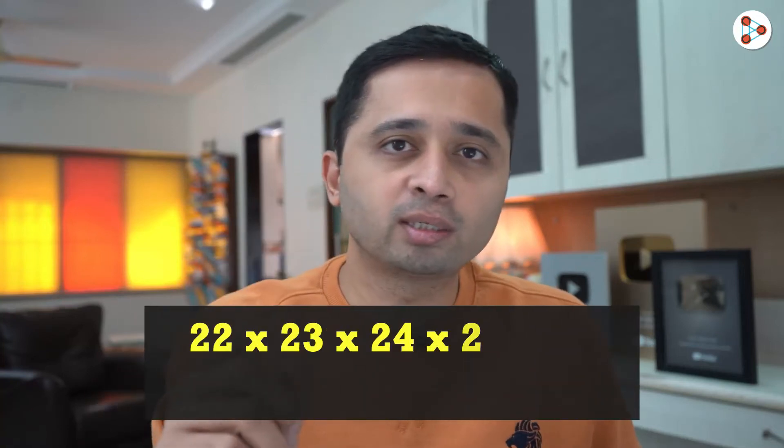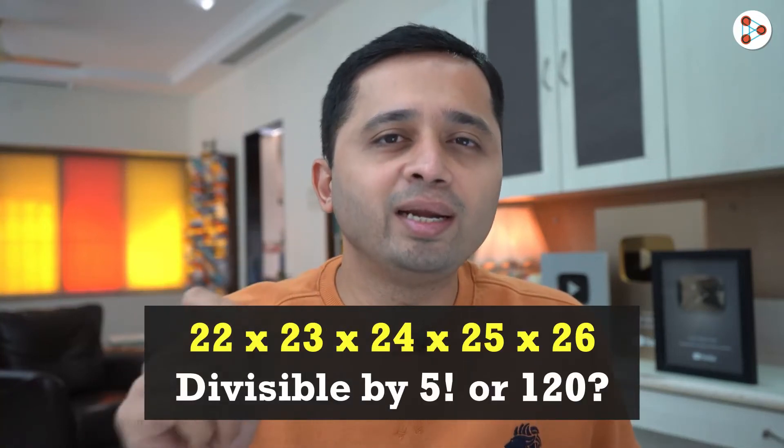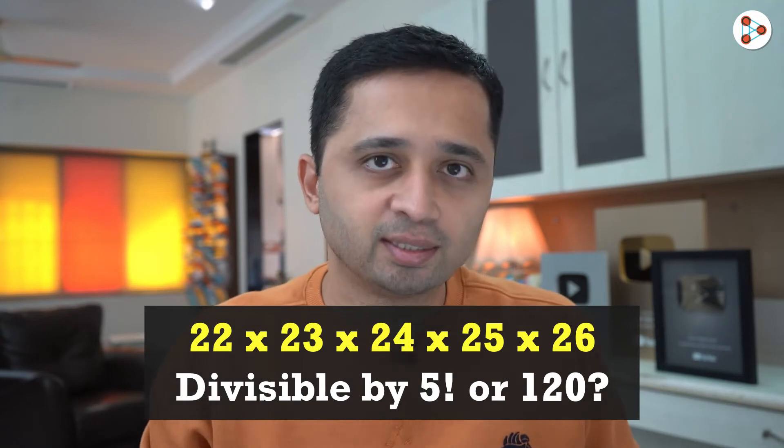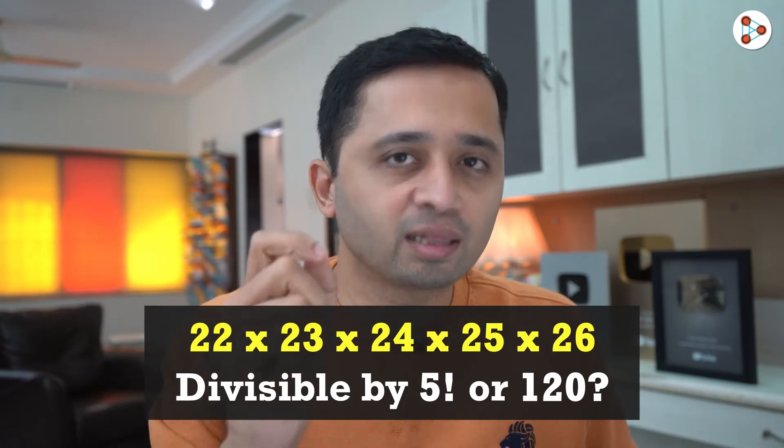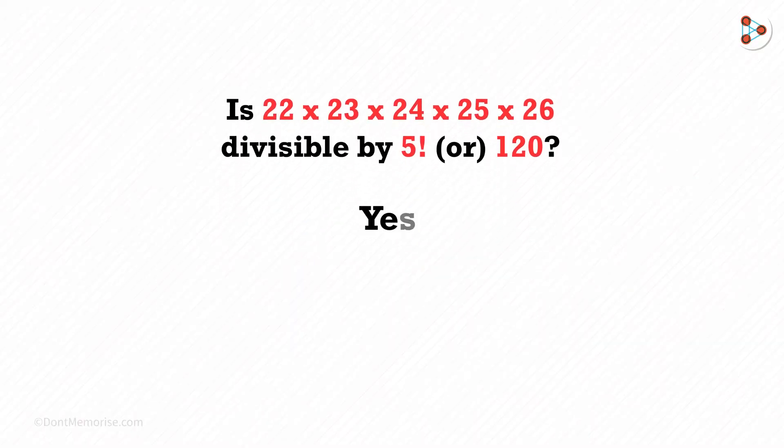In the numbers, it says that the product is divisible by 5 factorial or 120, or is it not? Yes, it is divisible. And I don't think about it as much as I thought. But this is how it comes.